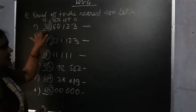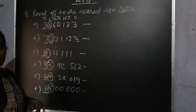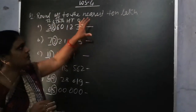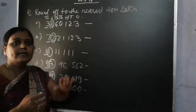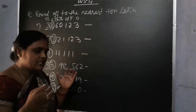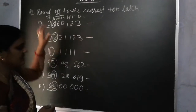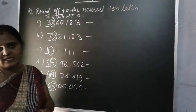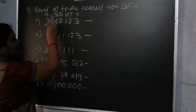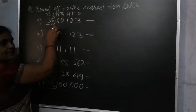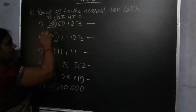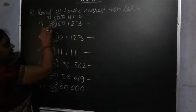We will see the lakh place and round off accordingly. Remember, whenever we have to round off to the nearest 10 lakh, we look at the digit on the lakh place. Here the digit is 8, and 8 is more than 5.